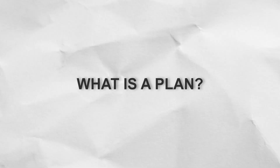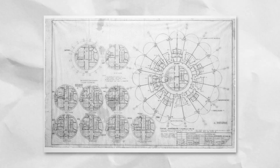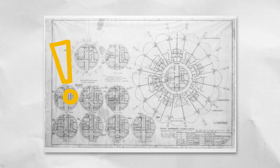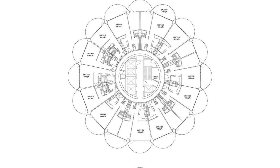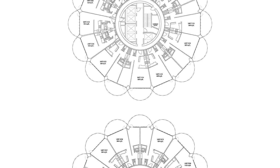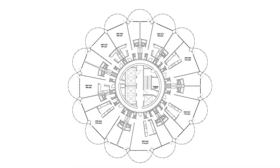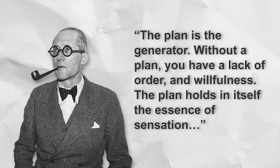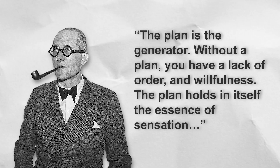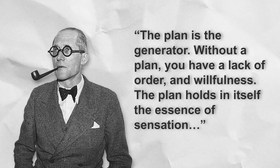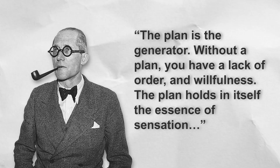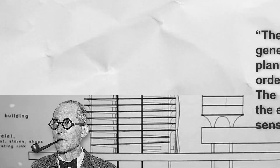What is a plan? The drawing type that is often argued to be the most important and crucial is a plan. A plan visually represents the relationship between surfaces and volumes within a space or a set of spaces and a building. Even Le Corbusier in Towards a New Architecture stated: "The plan is a generator. Without a plan, you have a lack of order and willfulness. The plan holds in itself the essence of sensation."